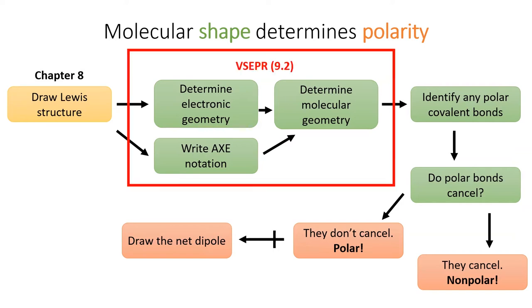Last lesson, we learned valence shell electron pair repulsion, or VSEPR, which predicts the shapes of molecules. In this lesson, we will use molecular shape, along with what we learned in section 8.4 about bond polarity, to determine whether an entire molecule is polar or not. This helps predict the properties of the molecule, like its boiling point and its solubility.